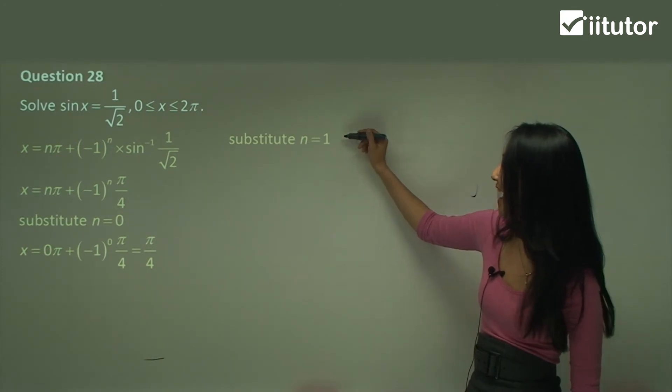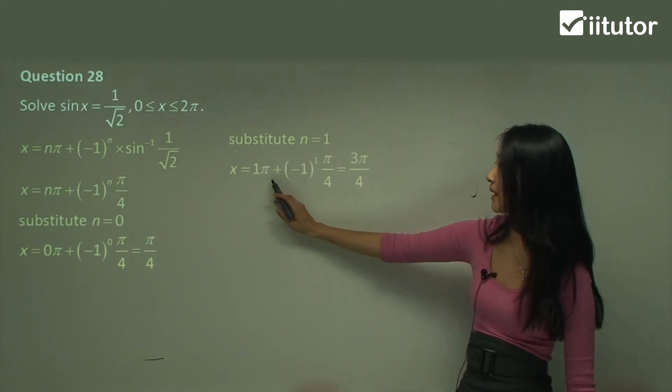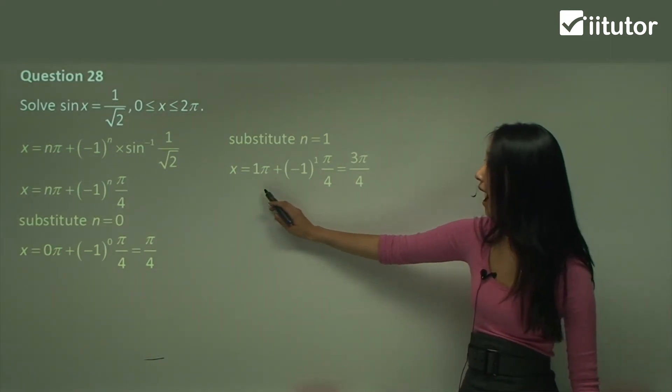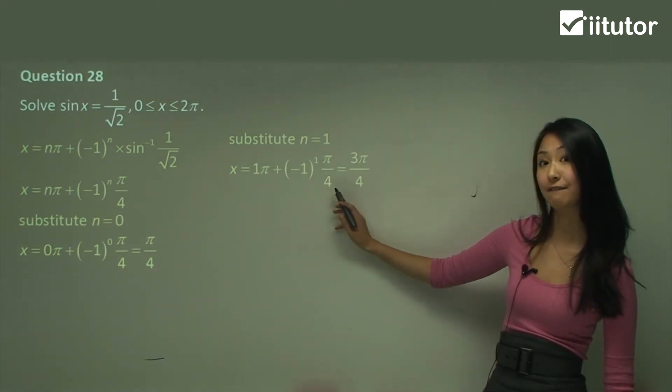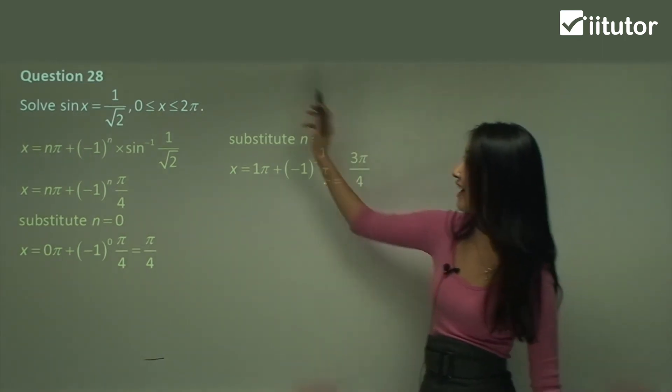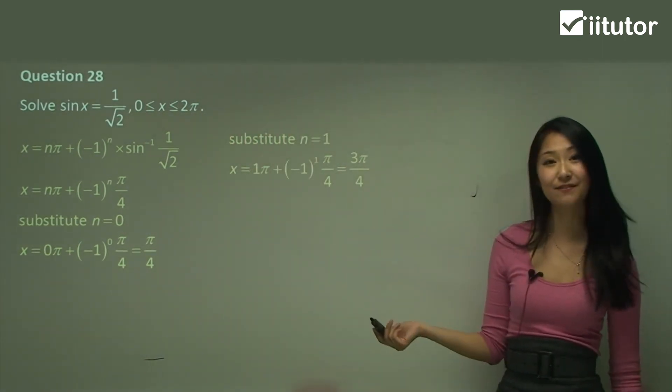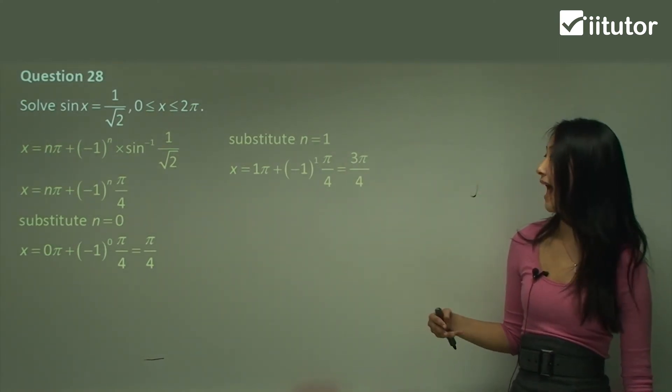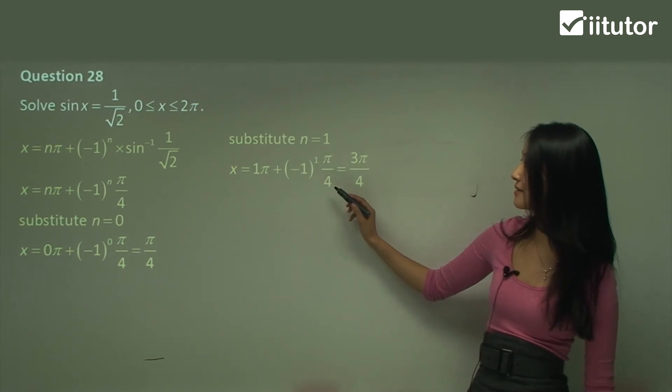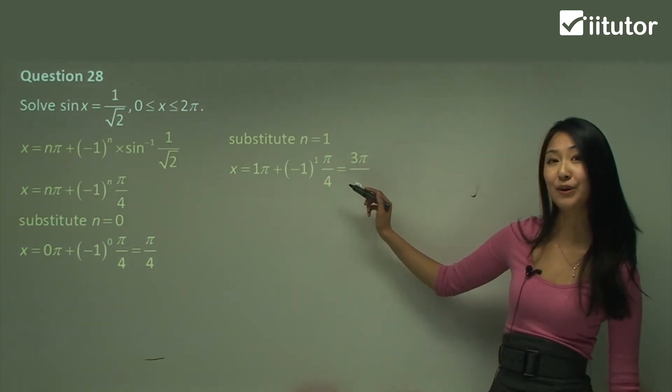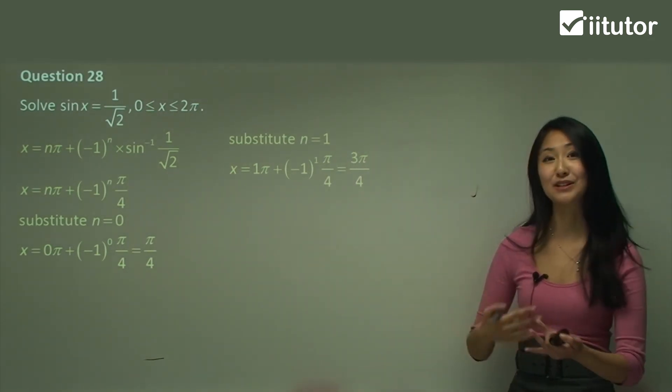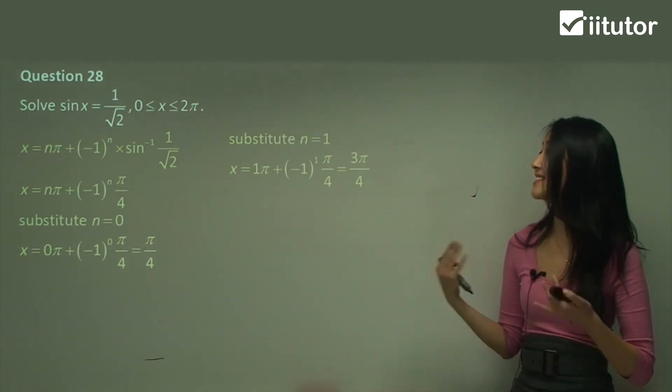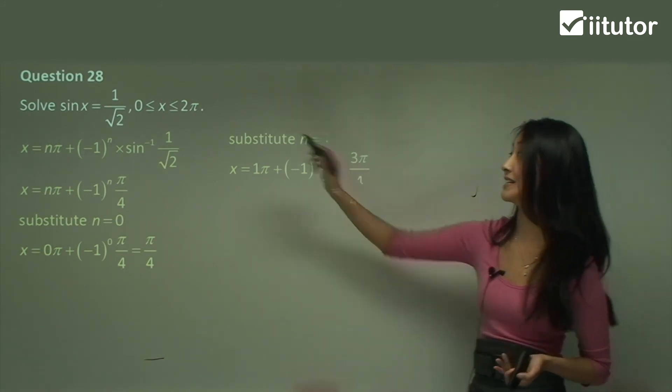So this just becomes pi. This is negative so we have pi minus pi on 4 which is 3 pi on 4. Checking that, yes it does fit in there. And we can test n equals to 2 and that becomes 2 pi plus it's going to be pi on 4 which is too large isn't it because 2 pi plus anything is going to be greater than 2 pi. So you know it doesn't fit in there and same with negative 1 it doesn't fit into the domain.